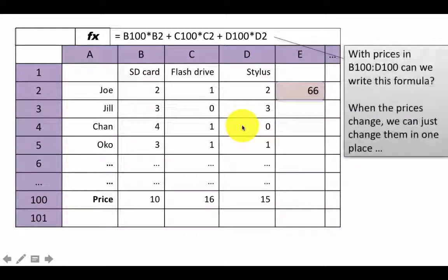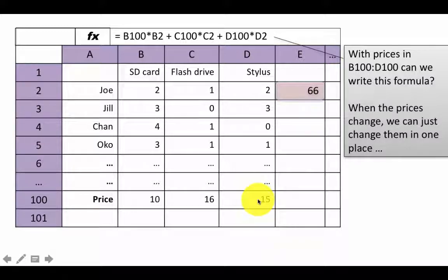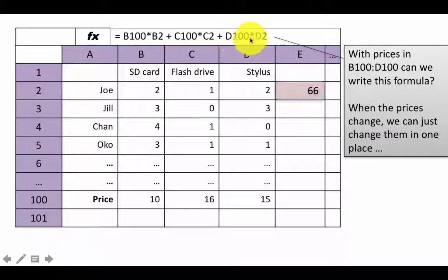When prices change, we can't just change them in one place with the current approach. So let's take a different approach: put the actual prices in a particular place. In this case, I'm showing that in row 100 we've recorded the prices of the SD card, the flash drive, and the stylus. With prices in separate cells, we might write the formula as B100 times B2 — B100 containing the price of the SD card — C100 times C2 for flash drives, and D100 times D2 for the stylus.